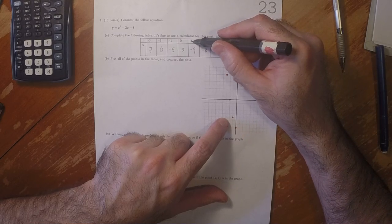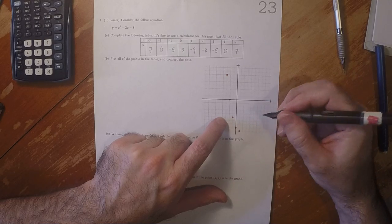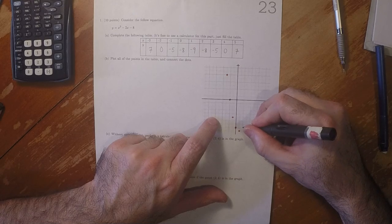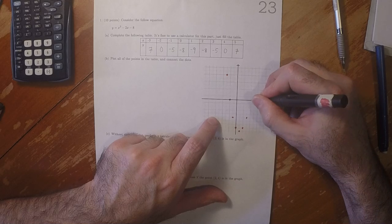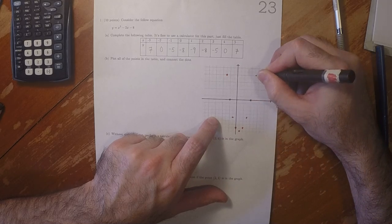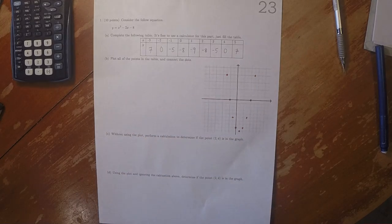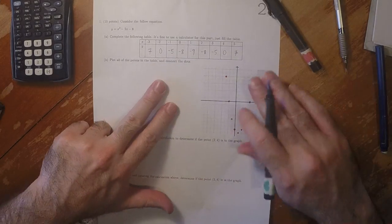At x = 1, negative 9, and then symmetric after this. So those are the points in the table, and then connecting the dots.